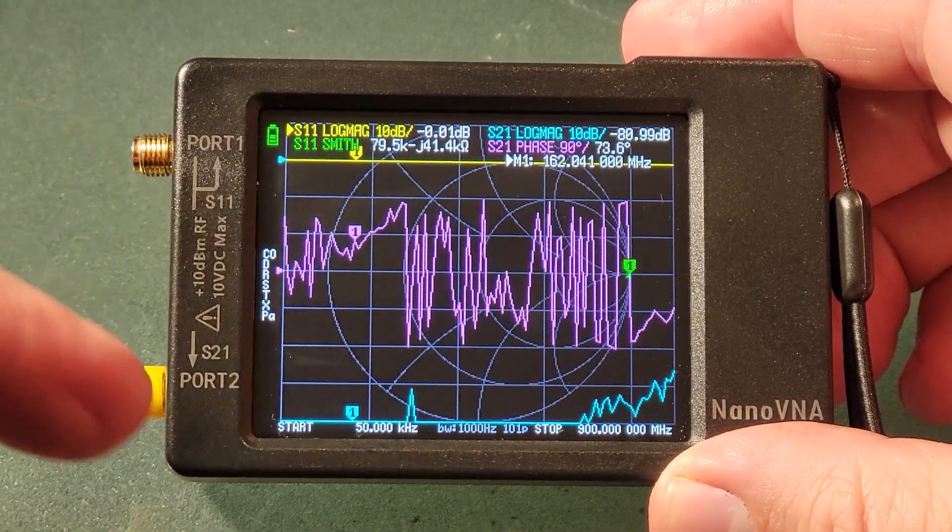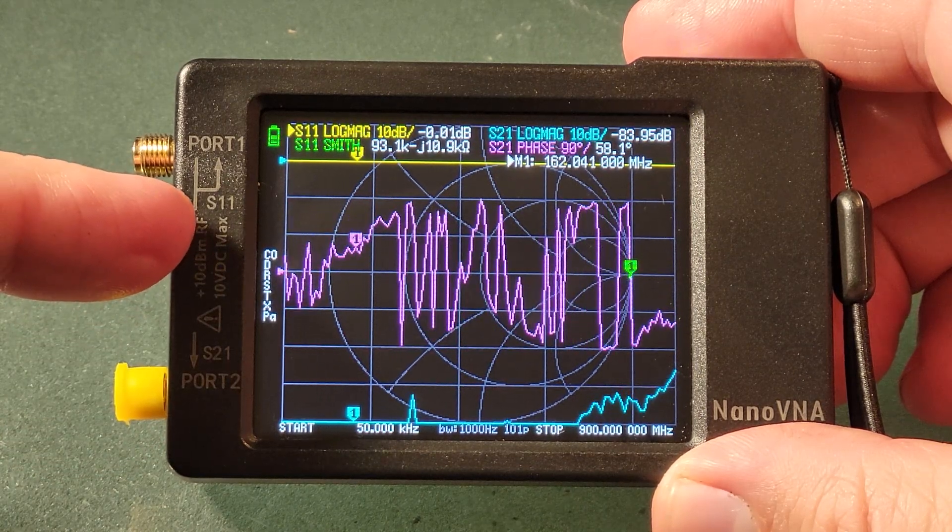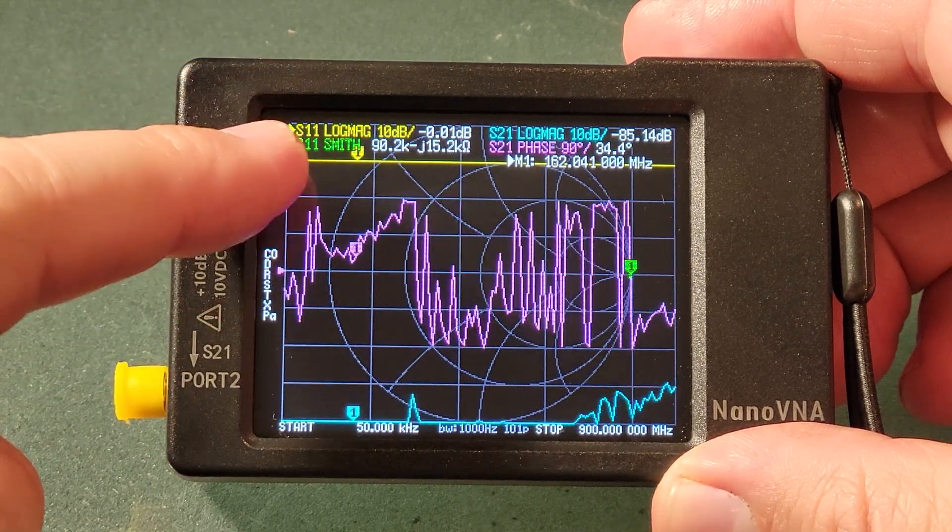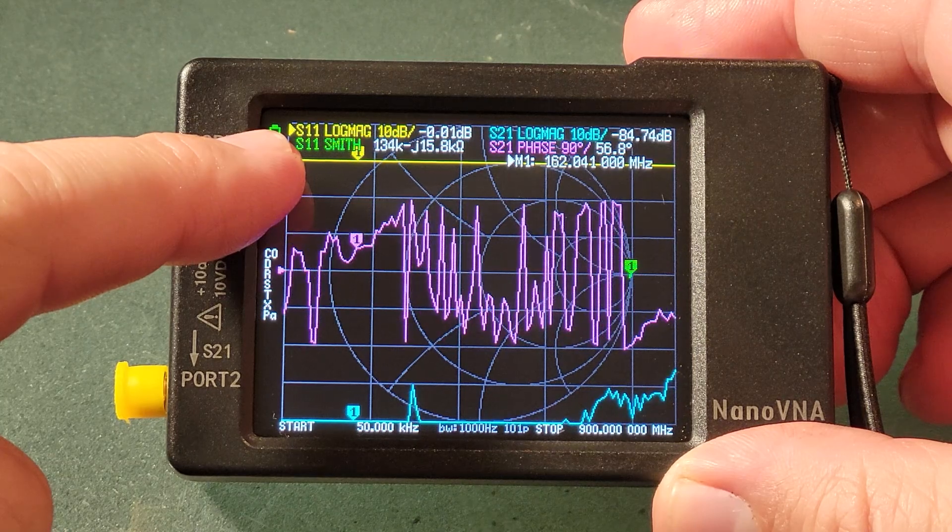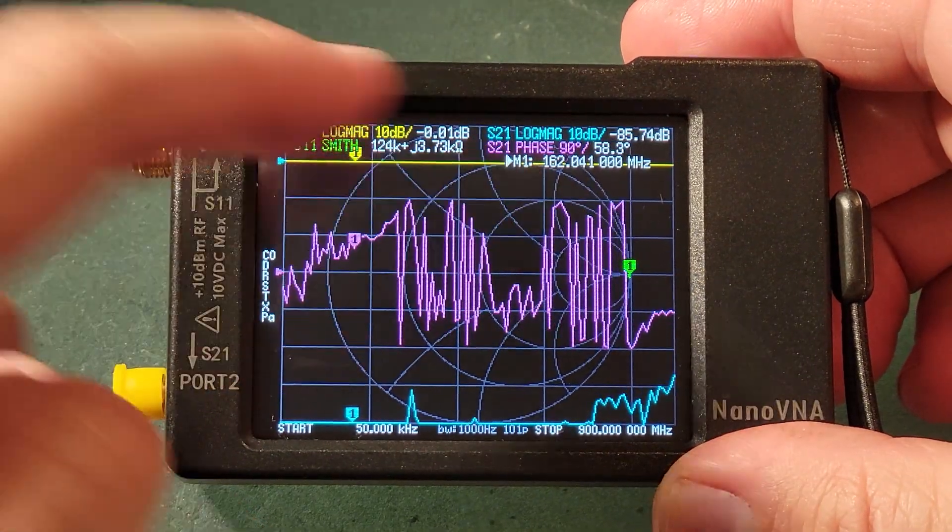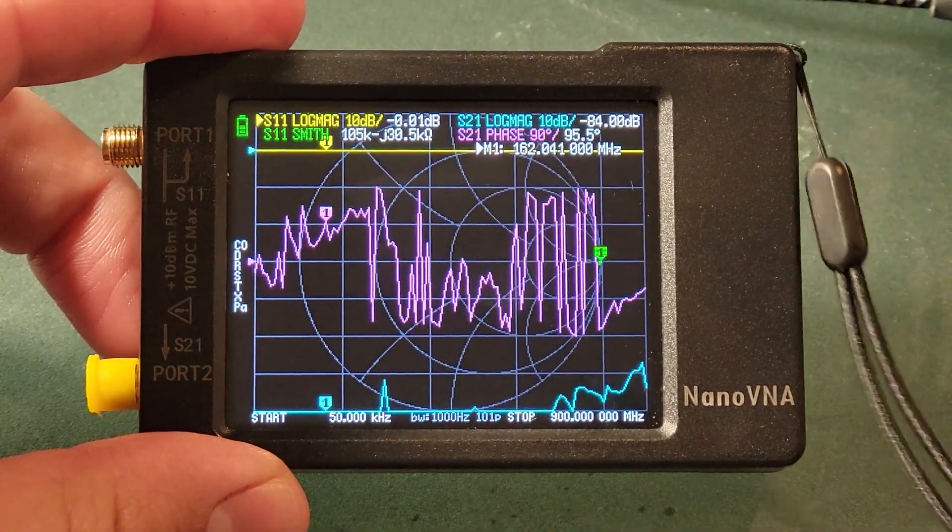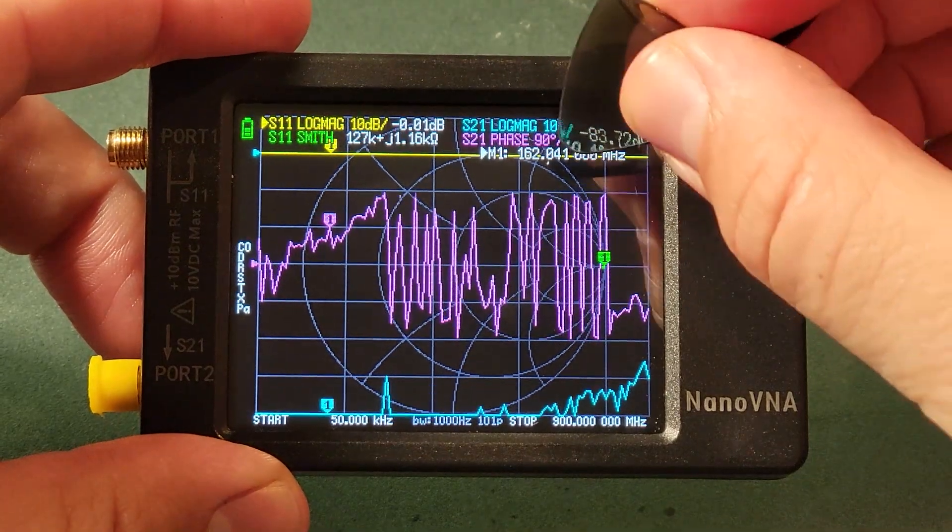Notice we have ports 1 and 2 here which seems pretty clear except that underneath there it says S11 and S21. When we get into the software we'll notice that the ports are actually referred to with those subheadings the S11 and S21. So we've got our cover off here and we're going to use the included guitar pick to manipulate the touchscreen.